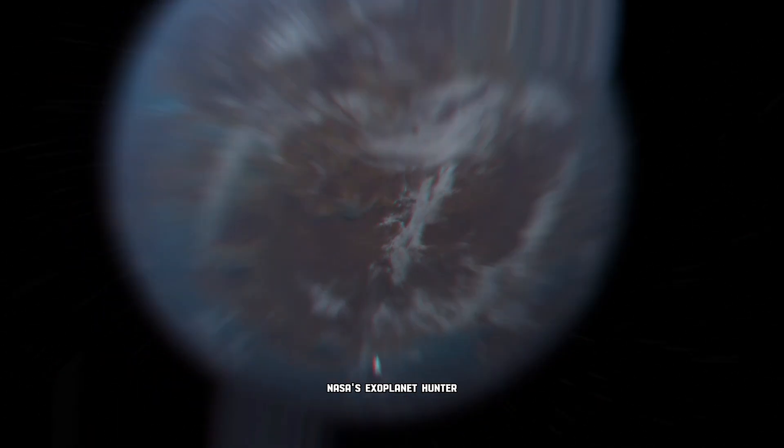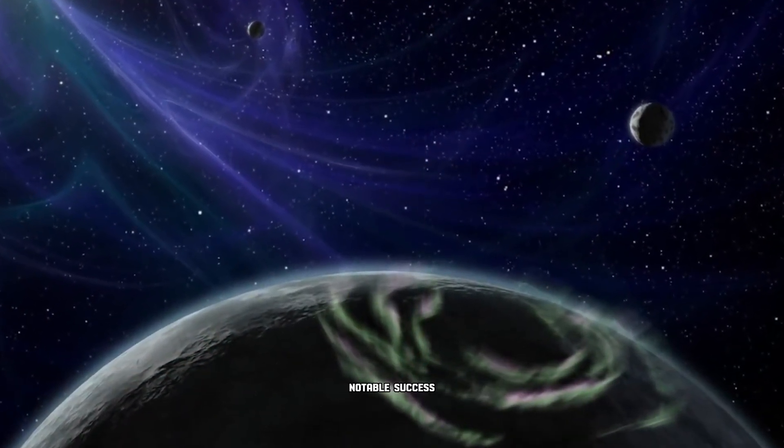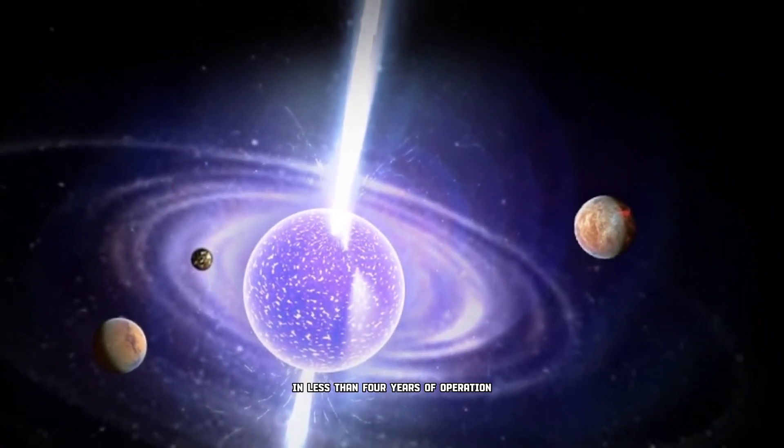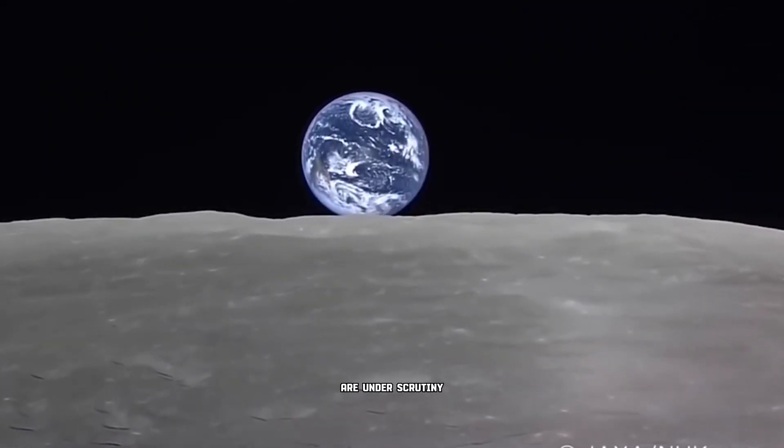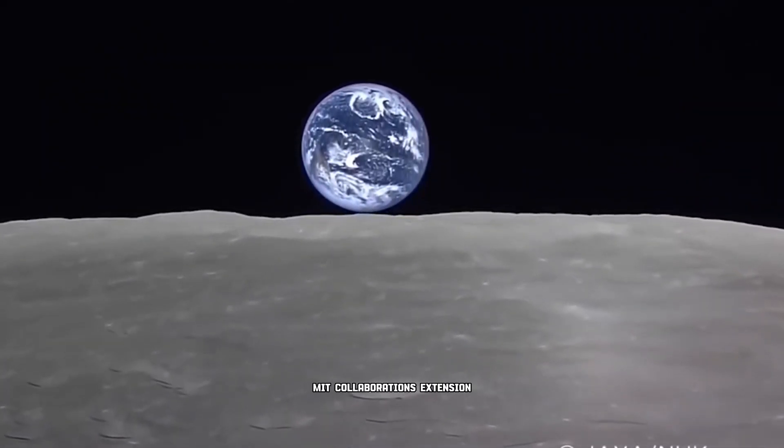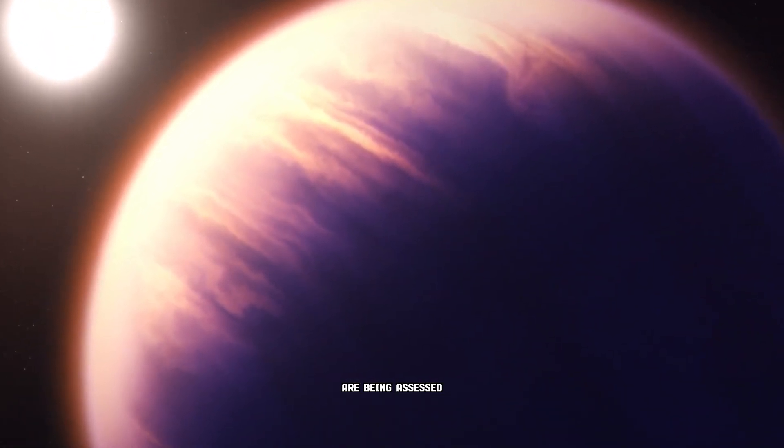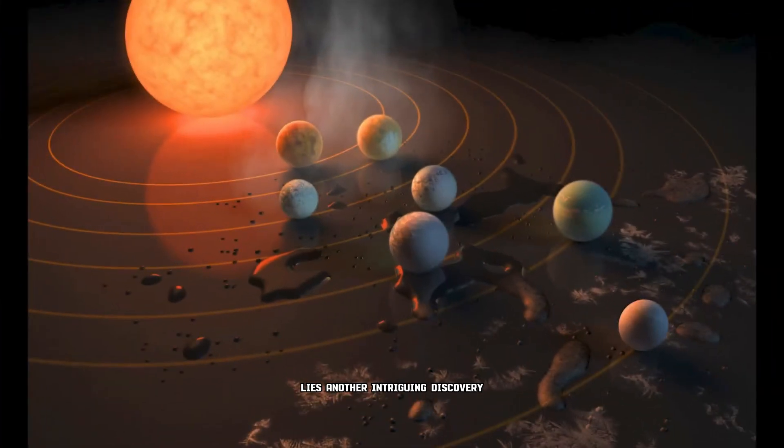NASA's exoplanet hunter, the transiting exoplanet survey satellite, has already been a notable success, with around 5,000 potential alien worlds detected in less than four years of operation. These findings are under scrutiny, and thanks to the NASA-MIT collaboration's extension, hundreds of potentially habitable exoplanets are being assessed. Beyond exoplanets lies another intriguing discovery: rogue planets.